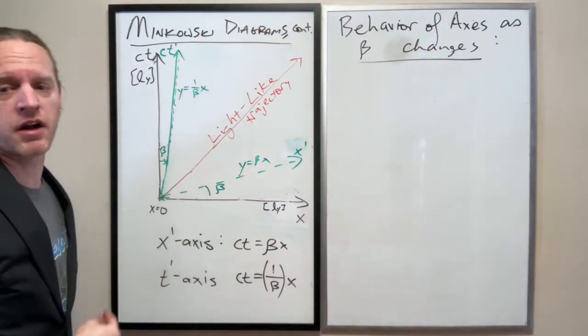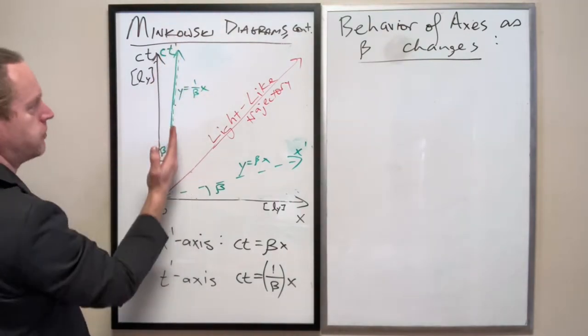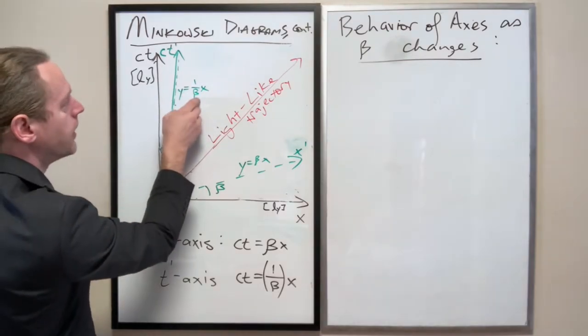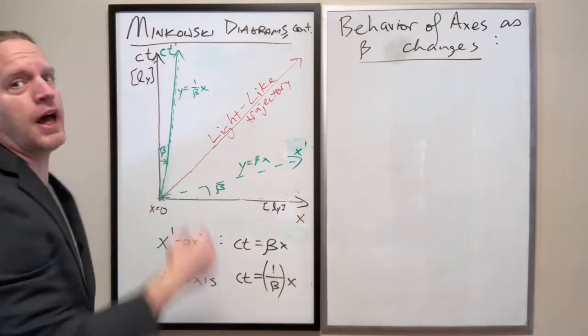Effectively, that means that the slope on this line here, a space-time versus time line, the slope will become effectively infinite, which is what a vertical axis is.